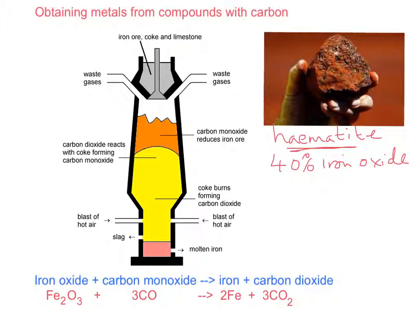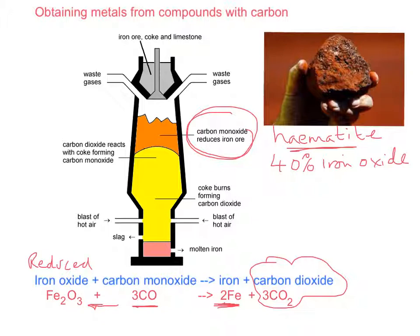In summary, the carbon monoxide, here it is again, reduces iron oxide. It grabs the oxygen to turn into carbon dioxide, leaving iron behind. Iron oxide is reduced to form the product.